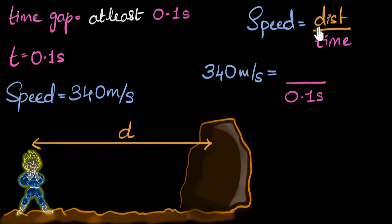And what's the distance? Well you might think distance is d, but it's not. You see, the sound has to go forward and then come back to hear the echo. So the total distance traveled by the sound is 2 times the value of d. So it will be 2d.